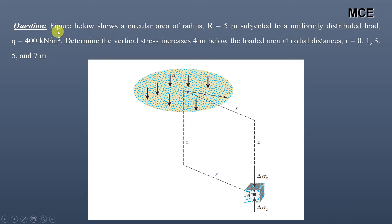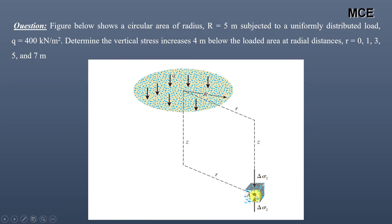The given question states that the figure below shows a circular area of radius 5 meters subjected to a uniformly distributed load Q equals 400 kilopascal. We have to determine the vertical stress increase 4 meters below the loaded area at radial distances of 0, 1, 3, 5, and 7 meters. This is our circular loaded area and we have to find the vertical stress increase at point A at a depth of 4 meters with varying radial distances.